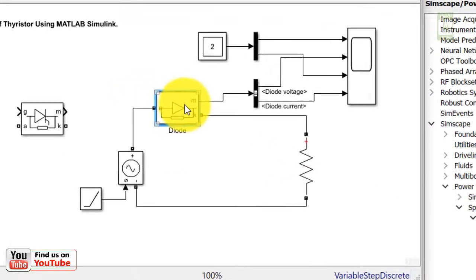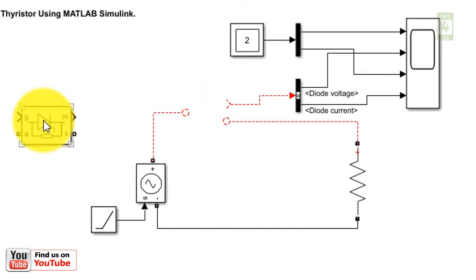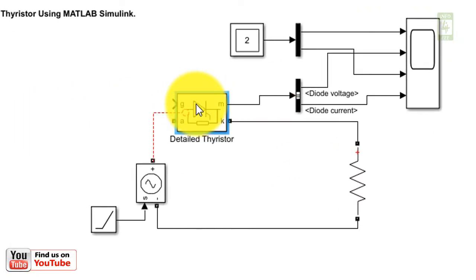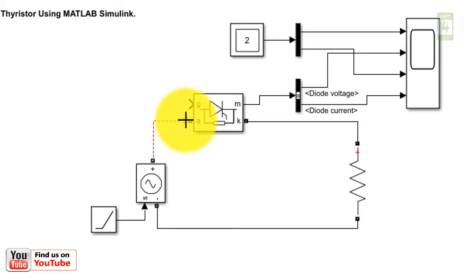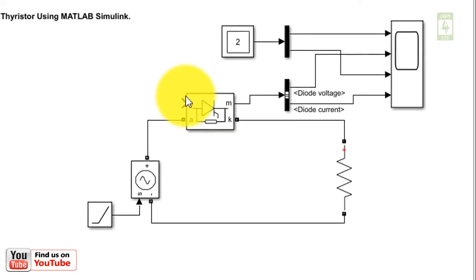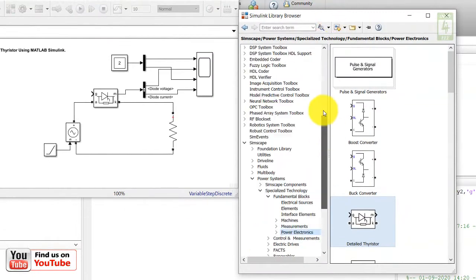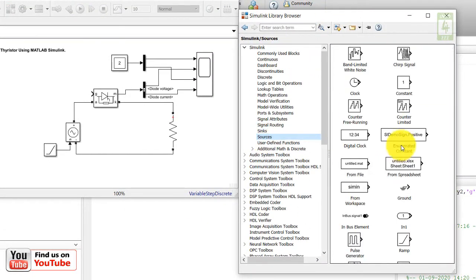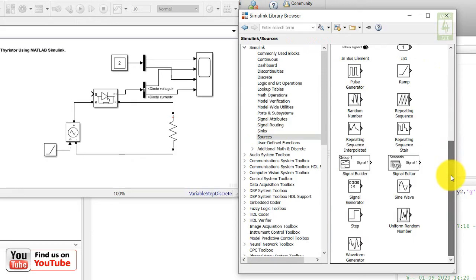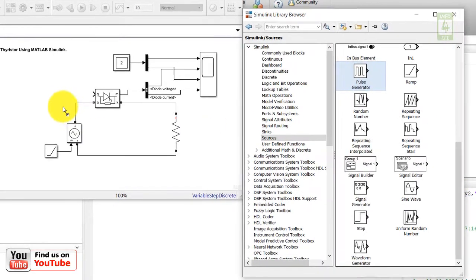Now remove the diode block and place the thyristor block in its place, then connect its terminals. The gate terminal is given here, at which you need to apply the gate signal. We will generate the gate signal through a pulse generator. Go to your Simulink library, go under Sources, and identify the pulse generator block. Drag this block into your simulation file.